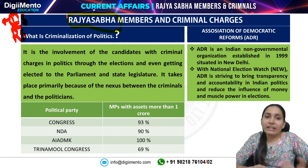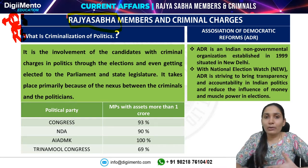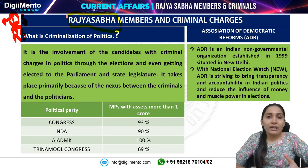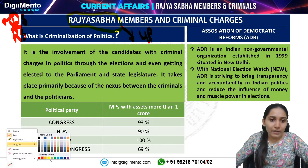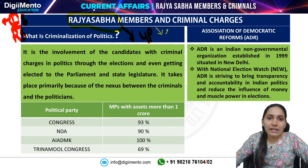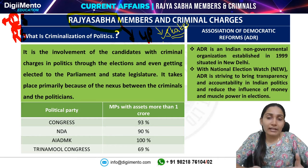With regard to Lok Sabha, the elections are direct. Into the lower house of the parliament, elections are direct elections, which means every five years all adult citizens who are 18 years and above will go to the polling booth and cast their vote to a particular candidate in every constituency. Coming to Rajya Sabha, the elections are indirect, which means members are elected by the MLAs of the respective states.